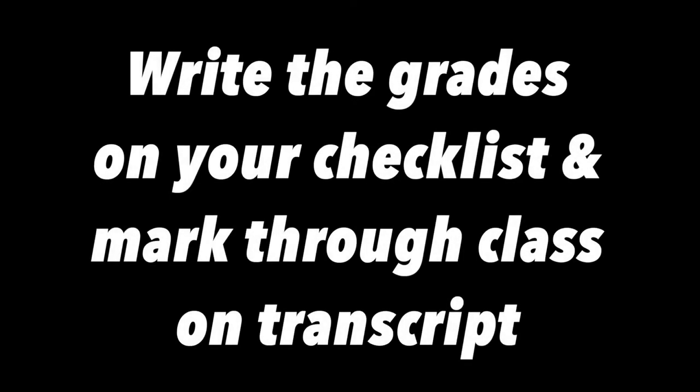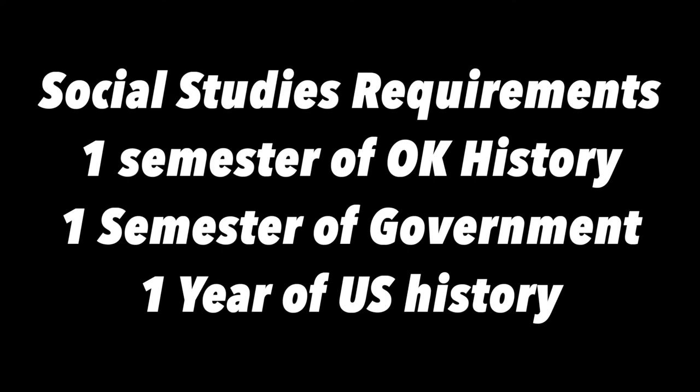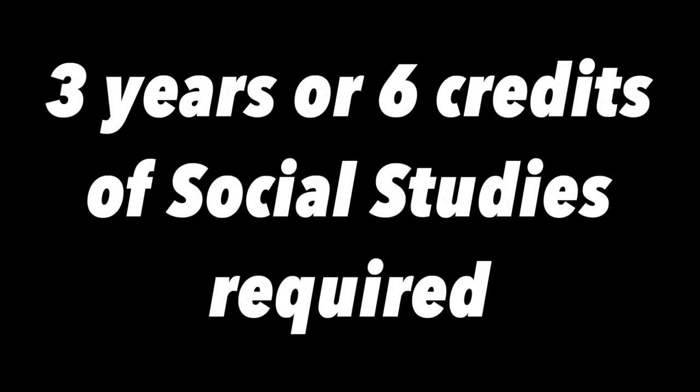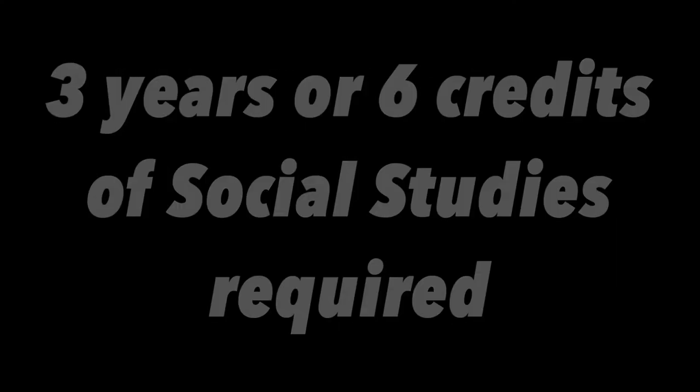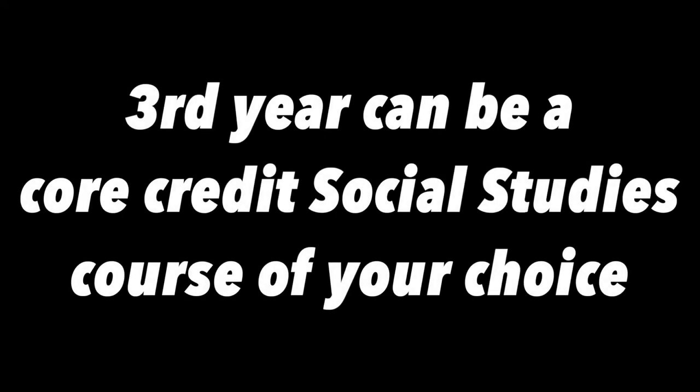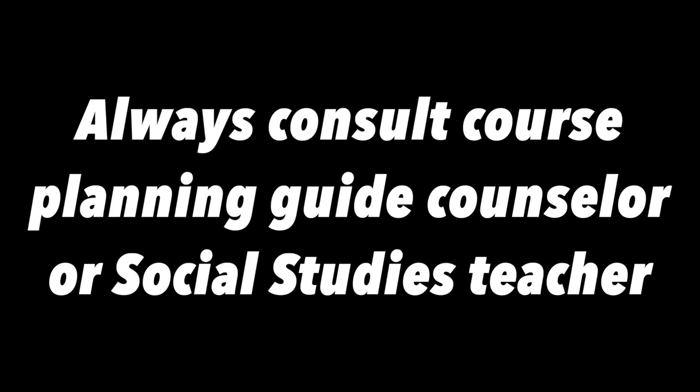Put a check mark by what you are currently taking. For our social studies section, it is important to remember you are required to take a semester of Oklahoma history, a semester of government, and a full year of U.S. history. You need a total of three years or six credits. Your third year of social studies can be a core credit social studies course of your choice. Always consult the course planning guide, your counselor, or social studies teacher to make sure the course you take is a core credit.